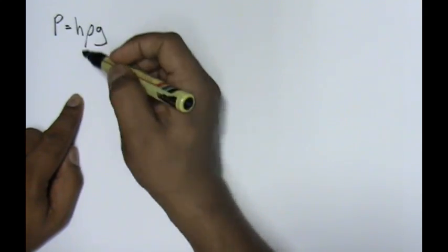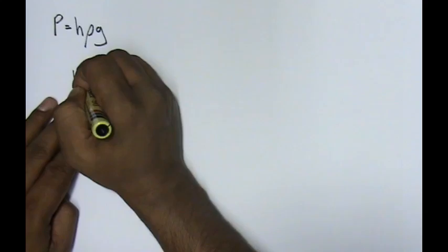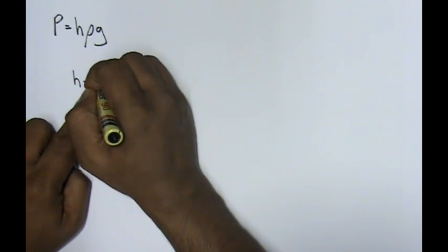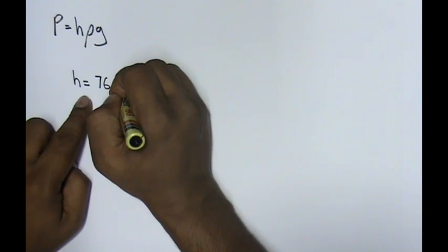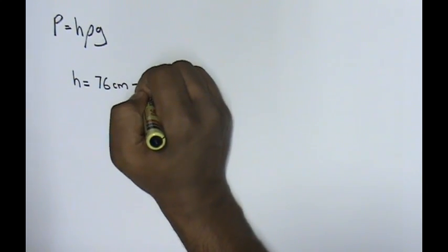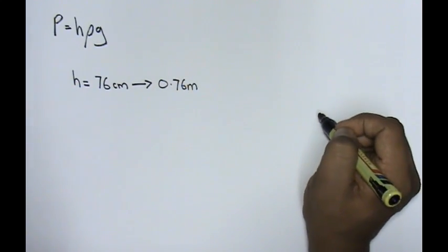Now, first, the height. If you notice, the height of our mercury in our barometer earlier was 76 centimeters. Converting this to meters, 0.76 meters.